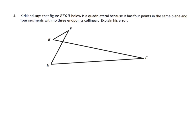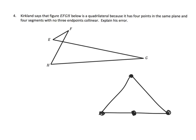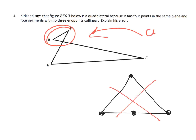The last problem: Kirkland says this figure is a quadrilateral because it has four points and four sides, with no three points being collinear. However, it's possible to have four points that look like a valid setup but still not form a quadrilateral — for example, if three points are collinear. In this case the figure has been pinched or twisted — a complex or self-intersecting figure. This is definitely not a quadrilateral because the sides are not allowed to cross and intersect.